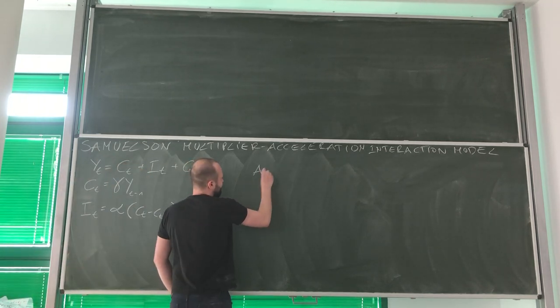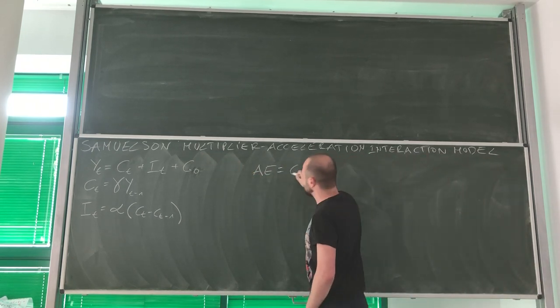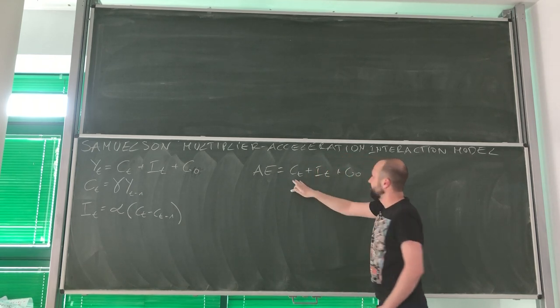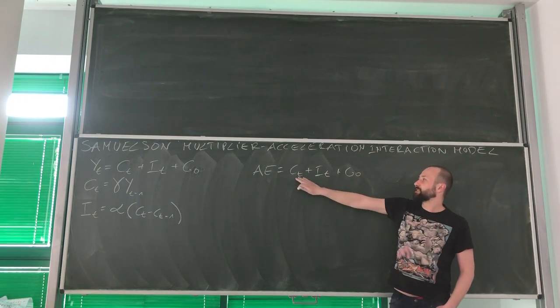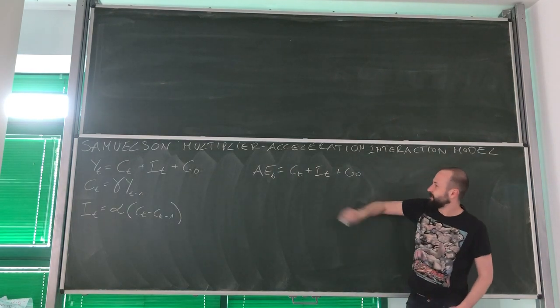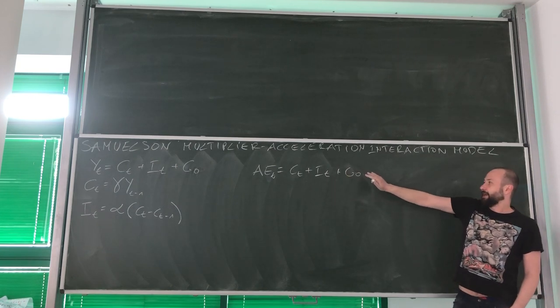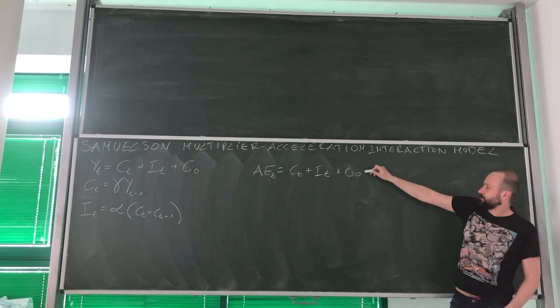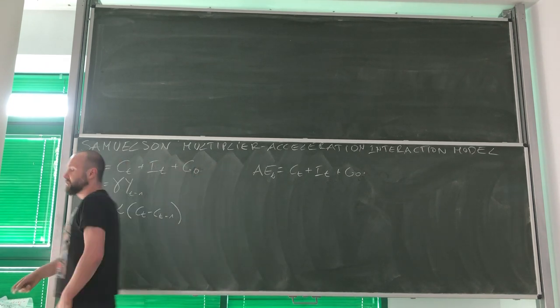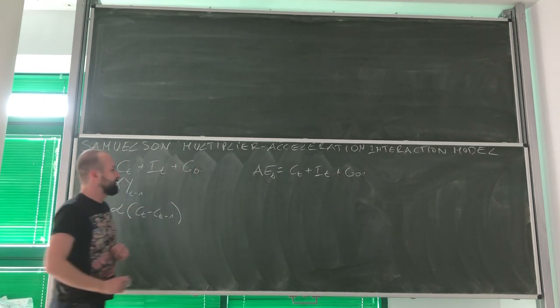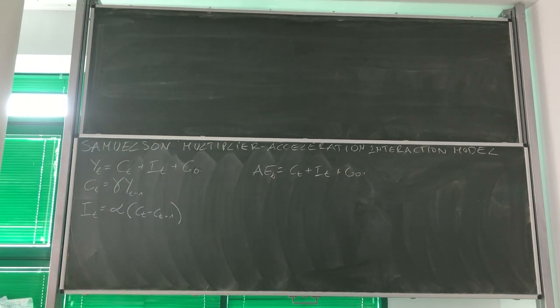First thing that we do in this model is to define aggregate expenditures. Aggregate expenditures in our model are given by these three equations: Y_T = C_T + I_T + G. So aggregate expenditures at time T are equal to the consumption at time T, investment at time T, and government spending, here given exogenously. We are assuming that this is the parameter for government to change, so we are not adding the time subscript. This is our exogenous variable in this model.